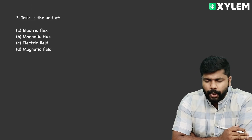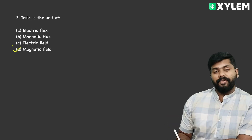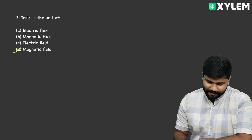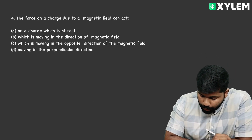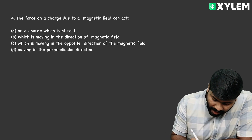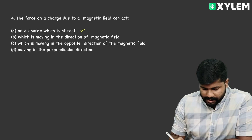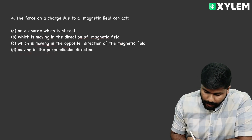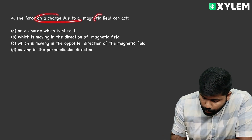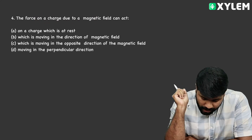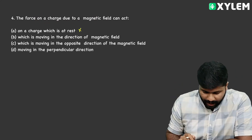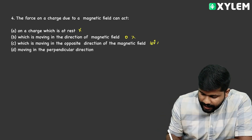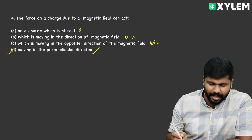The next question is simple: Tesla is the unit of magnetic field. Now the next question: the force on a charge due to a magnetic field can act — when a charge is at rest, moving in the direction of the magnetic field (angle 0°), moving in the opposite direction (angle 180°), or moving in the perpendicular direction. Correct option: D — moving in the perpendicular direction.